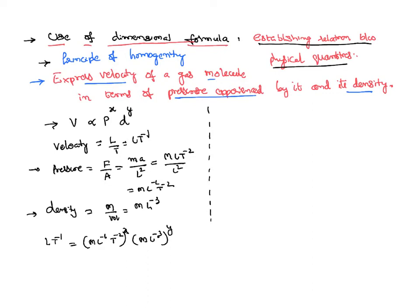Okay, now we can rearrange the terms of LHS and RHS. Let us try to rearrange the terms. LT^-1 equal to, here M^x is there, here M^y is there, I can write M^(x+y).